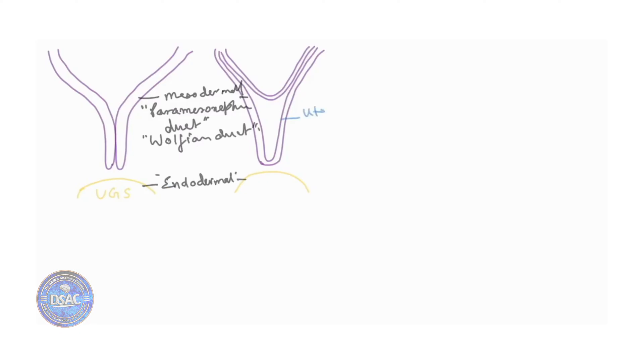This is uterovaginal canal after being canalized. So when this approaches towards this urogenital sinus from the lining of this primitive urogenital sinus there is this sinovaginal bulb. These are the endodermal thickenings proliferated from the wall of the urogenital sinus. This is sinovaginal bulb.